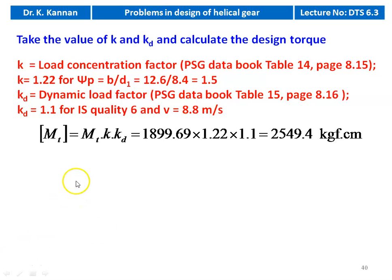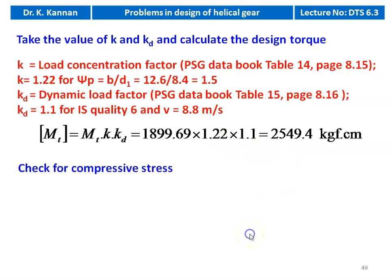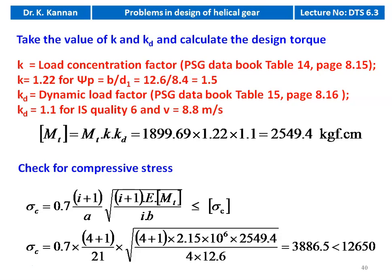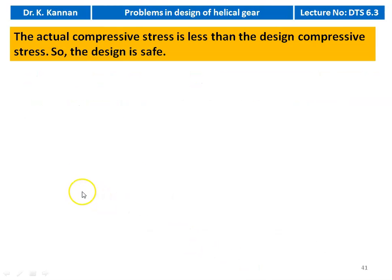Revised design torque: MT_design = MT × K × KD = 1461.3 × 1.12 × 1.1 = 1800.1 kgf·cm. (Note: calculation shown as 1899.69 × 1.12 × 1.1 = 2340.8 kgf·cm in the worked example.) Checking compressive stress: σC = 0.7 × (i+1)/A × √[(i+1) × E × MT / (i × B)] = 0.7 × 5/21 × √[5 × 2.15×10⁶ × 2549.4 / (4 × 12.6)] = 3088.5 kgf/cm², which is less than 12,650 kgf/cm². The actual compressive stress is less than the design compressive stress, so the design is safe.